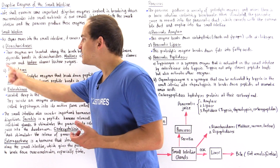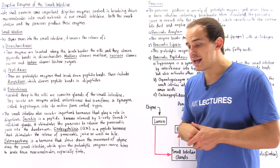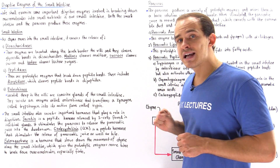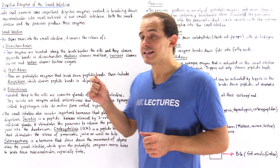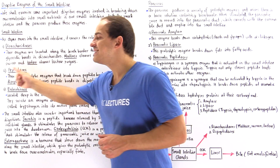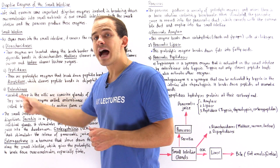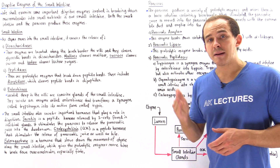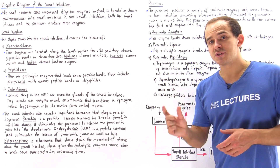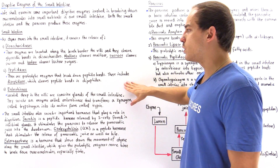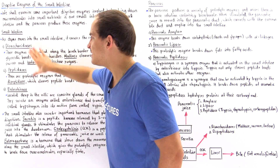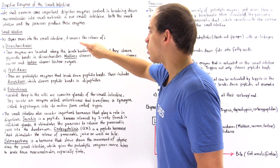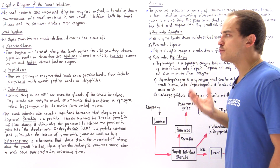Peptidases are those proteolytic enzymes that break down our peptides. A specific type of peptidase found at the brush border is dipeptidase. Dipeptidase is a proteolytic enzyme that breaks the peptide bonds in a peptide that only consists of two amino acids. Both categories of enzymes are found at the brush border of our villi in the small intestine.